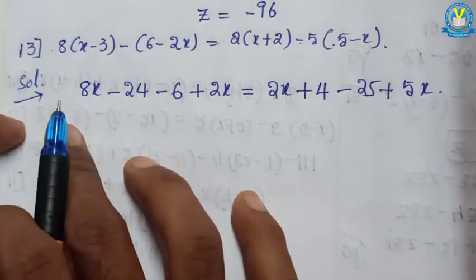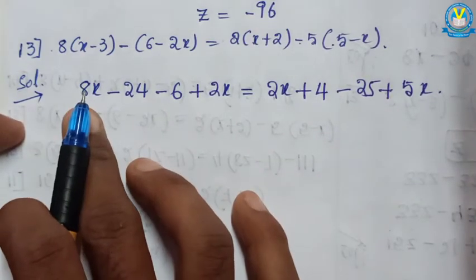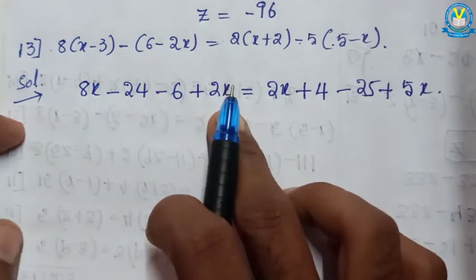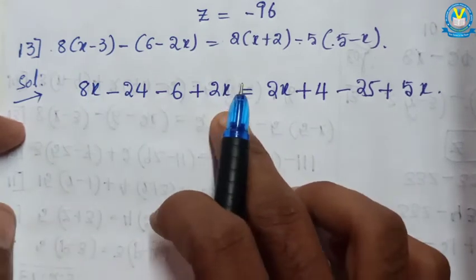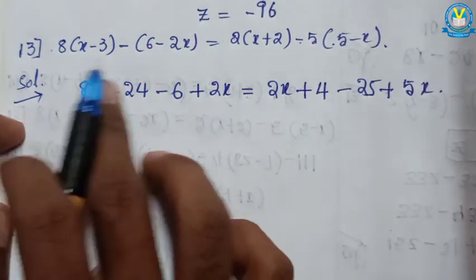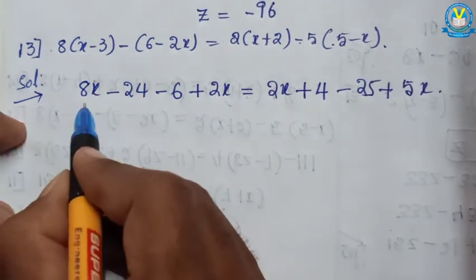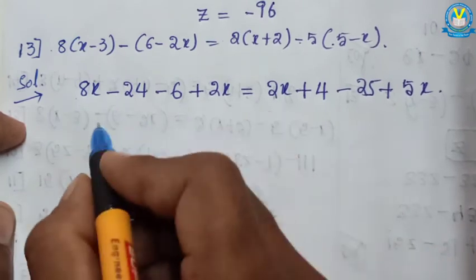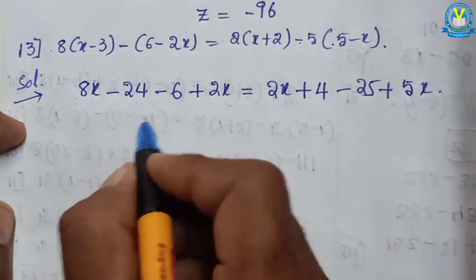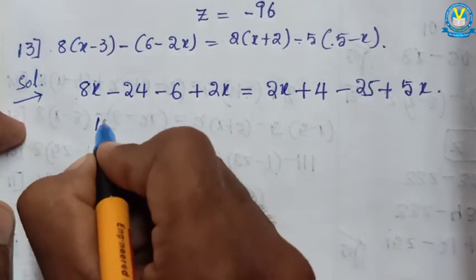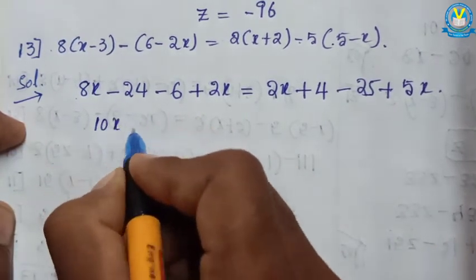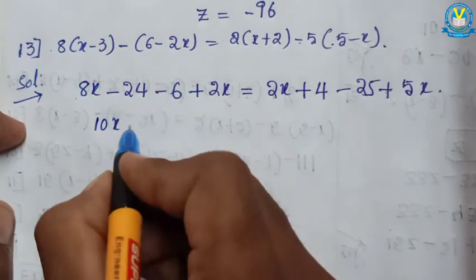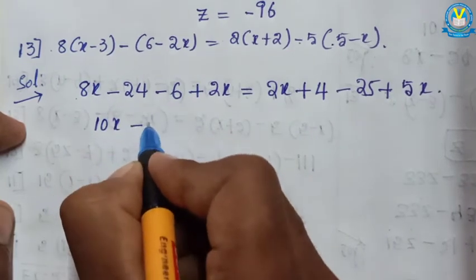Here also having x variables: 8x and 2x. Now I can add all x variables. 8x plus 2x — both are having the same sign, so addition — gives 10x. Minus 24 minus 6 — both having same sign, addition — gives minus 30.